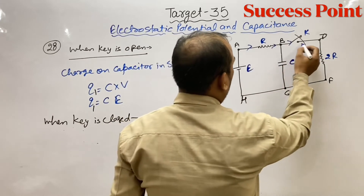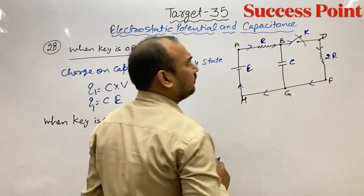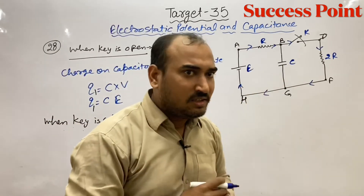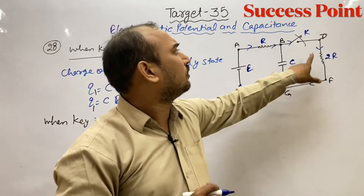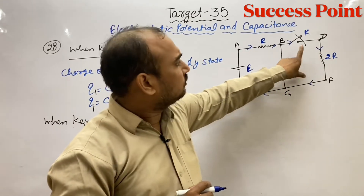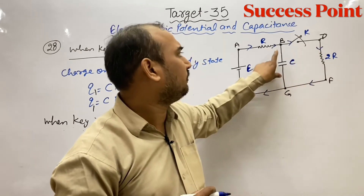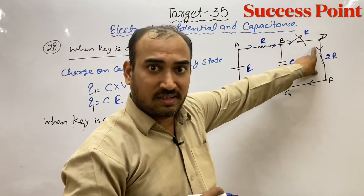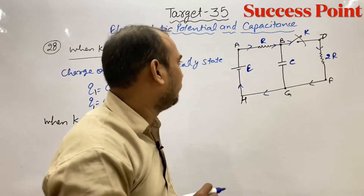When current is flowing, the charge on this capacitor is going to depend on the potential difference across it. Because this capacitor is in parallel with part of the circuit, the potential difference across it equals the potential difference across that parallel branch. So our work is to find that potential difference.